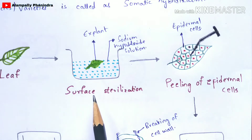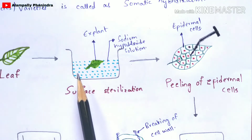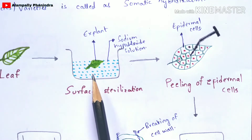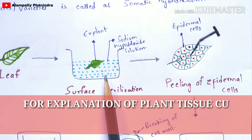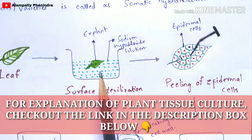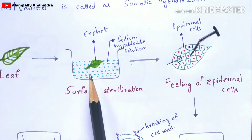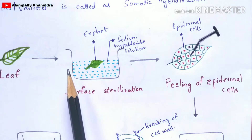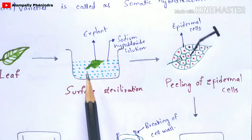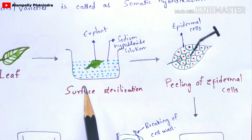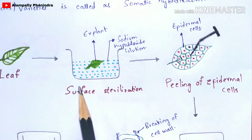Surface sterilization is a process that helps in the removal of bacteria present on the surface of the leaf. You take a beaker or jar, add sodium hypochlorite solution, and dip the explant in it. The sodium hypochlorite kills the bacteria on the leaf surface. Then you remove the leaf, wash it properly, and all surface bacteria are removed.